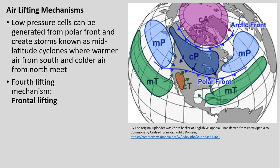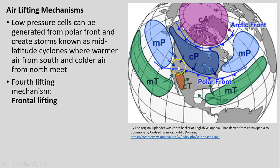We've seen this image on the right before, reminding ourselves of these different types of air masses. These low pressure cells that are generated from the polar front are really important in terms of creating storms known as mid-latitude cyclones. That's where our warmer and colder air, specifically from the south and the north, are meeting.